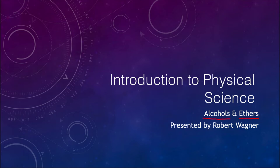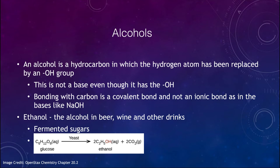Let's look at how we name these, starting with the alcohols. An alcohol is a hydrocarbon meaning it has hydrogen and carbon atoms. In this case we have replaced a hydrogen atom by a hydroxyl or an OH group. Please note this does not make it a base even though OH has been associated with bases. The bonding will be a covalent bond and not an ionic bond like in sodium hydroxide that we've looked at previously.